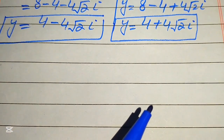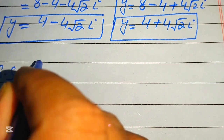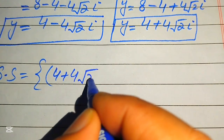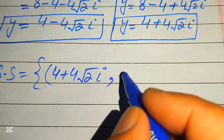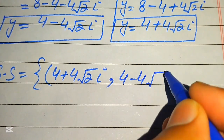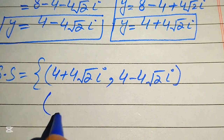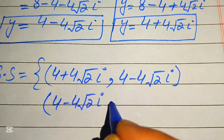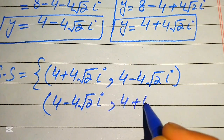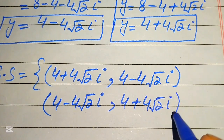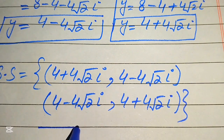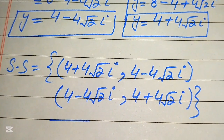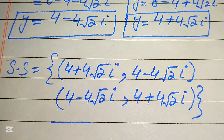Finally, there are two solutions to the given equation. The first solution set is x = 4 plus 4√2 iota and y = 4 minus 4√2 iota. The second solution set is x = 4 minus 4√2 iota and y = 4 plus 4√2 iota. These are the two solution sets of the given equation. Thank you so much for watching this video — please subscribe to my channel for more exciting videos.